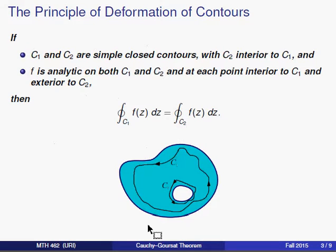Well, here's the principle. The principle of deformation of contours says, suppose you have two curves, C1 and C2. They're both simple closed contours, and let's say that C2 is located inside of C1. Let's say that f is analytic on both the curves, and at each point between the two curves.